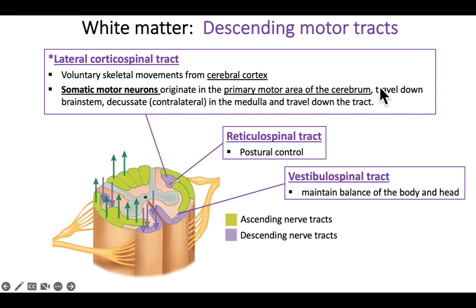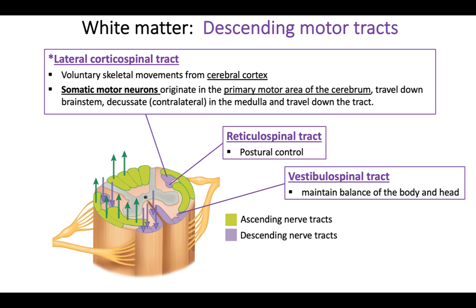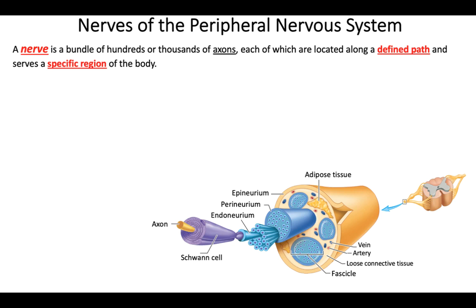The signal travels down, goes through the brain stem, then decussates — it crosses over at an area called the medulla — and then goes down the opposite side of the spinal cord. Decussation means crossing over, which means contralateral — going over to the other side of the body. So your right side of the brain controls the left side of the body, and the left side of the brain controls the right side of the body. That's a good place to stop. We finished the spinal cord using two videos and will go over spinal nerves in the next two videos.